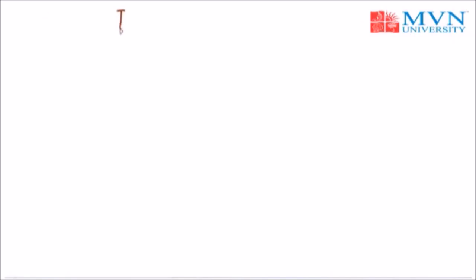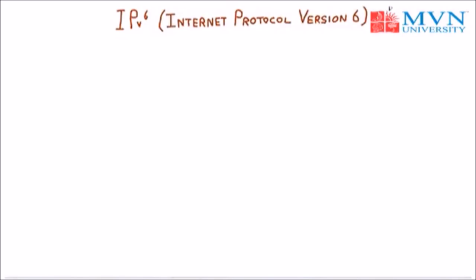Hello everyone, myself Ankita Verma. Today we will discuss our next topic, that is IPv6 or Internet Protocol version 6. IPv6 is the advanced version of IPv4. In 1990, IETF started work on a new version of IP which would never run out of addresses and would solve a variety of other problems, being more flexible and efficient. IETF issued a call for proposals and discussions, and after various discussions, meetings, and modifications, a combined version called SIPP — Simple Internet Protocol Plus — was selected and given the designation IPv6.